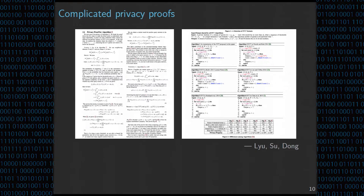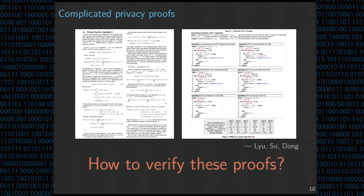Here is a picture of a privacy proof for a mechanism called Above Threshold. This was proposed a long time ago, but there have been many versions of this algorithm, some correct and some not. In a survey, six versions of this mechanism were given, all slightly different. At some point, all six were believed to be proved private, but after closer inspection, only three were actually private — so three or four of these are not private.